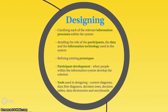In the designing stage, we clarify the relevant information processes of the system: who are the participants, what is the data and information, and what information technology will be used. We may refine existing prototypes and involve participants in development so the solution is tailored to them. Tools for representing our design include context diagrams, data flow diagrams, decision trees, decision tables, data dictionaries, and storyboards — all graphical tools that represent our ideas.